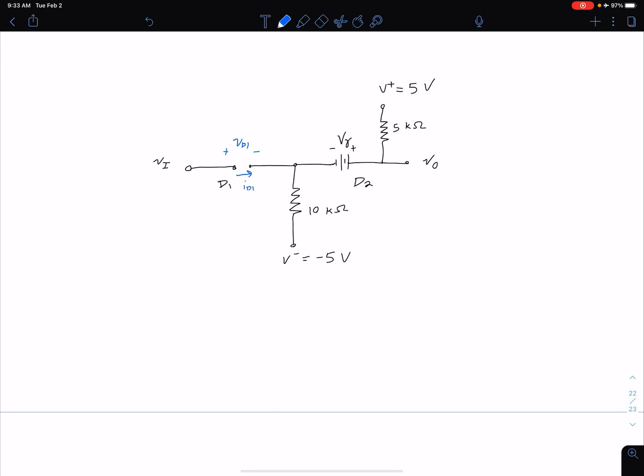So of course we can see this I_D1 should be zero. Our V_D1 we're going to have to check when we check our assumptions. Our V_D2 is V_gamma and we're going to need to evaluate our I_D2 to check our assumption for diode D2.